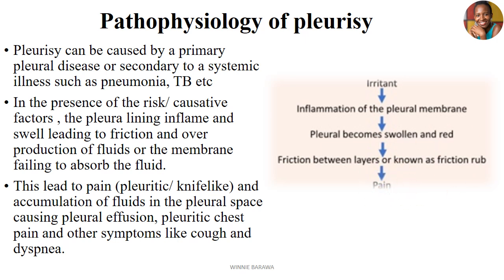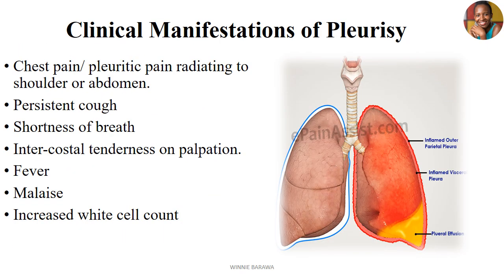These changes bring about extreme pleuritic pain that gets worse with coughing or breathing. Essentially, in the absence of coughing or when the breathing cycle is paused, the patient will not feel as much pain as when they are taking a deep breath. In clinical manifestation of pleurisy, the preeminent symptom is chest pain — pleuritic chest pain — that tends to radiate to the shoulders and also the abdomen.